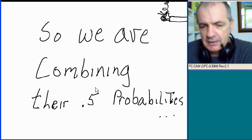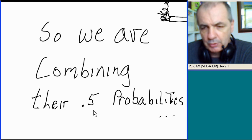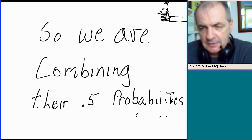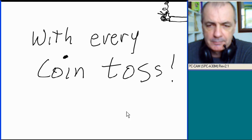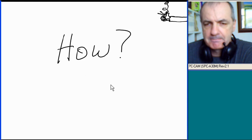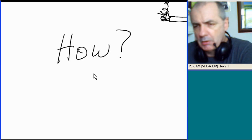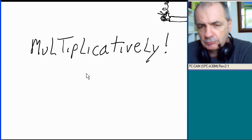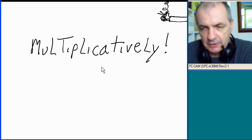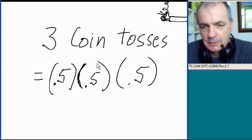50% is 0.5 in decimal. So we are combining the .5 probabilities of the three tosses. With every coin toss, we are combining them multiplicatively.